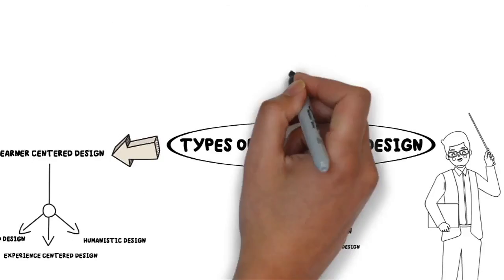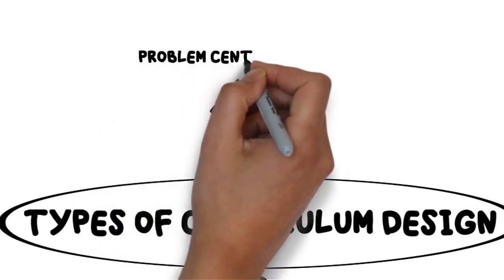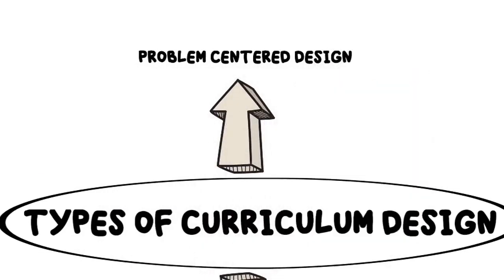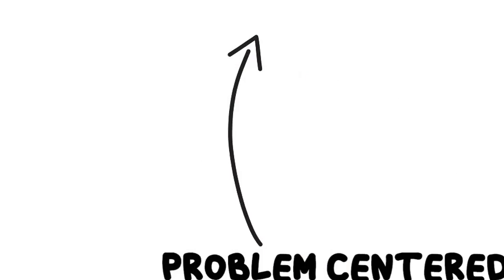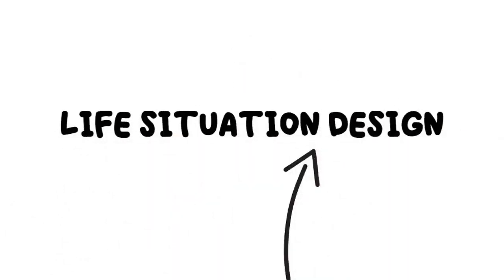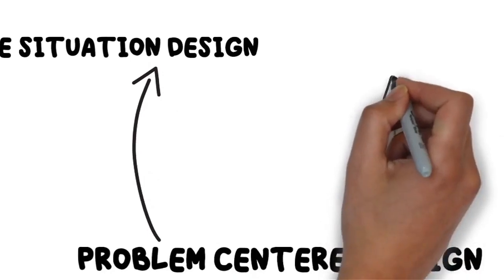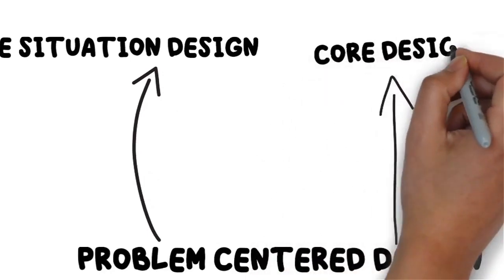The last design model is the problem-centered design. It draws on a more progressive view of the curriculum and has two types, the life-situation design and the core designs. Life-situation designs ensures that the contents are organized in ways that allow students to clearly view problem areas clearly. On the other hand, the core design centers on general education and the problems are based on common human activities.